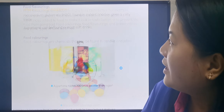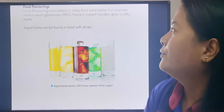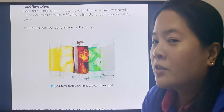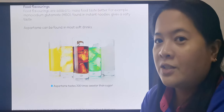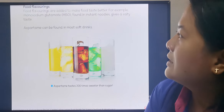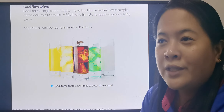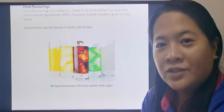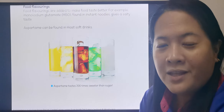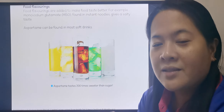We also have food flavorings. Food flavorings are added to make food taste better. One example of a food flavoring is monosodium glutamate, or MSG. These are found in instant noodles and give a salty taste. When you eat junk foods like chips, Lay's, and instant noodles, they put MSG — artificial flavorings — to make the food taste better.